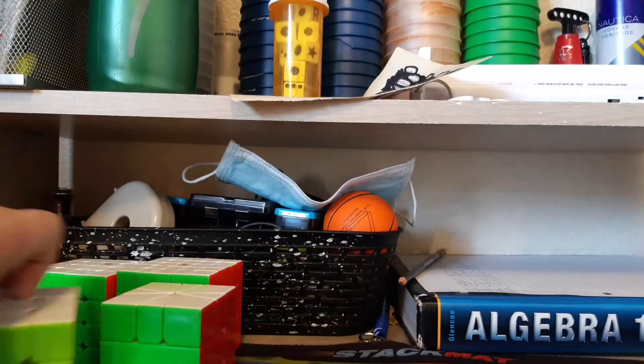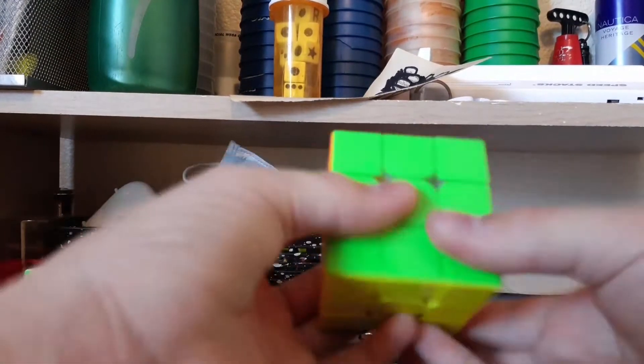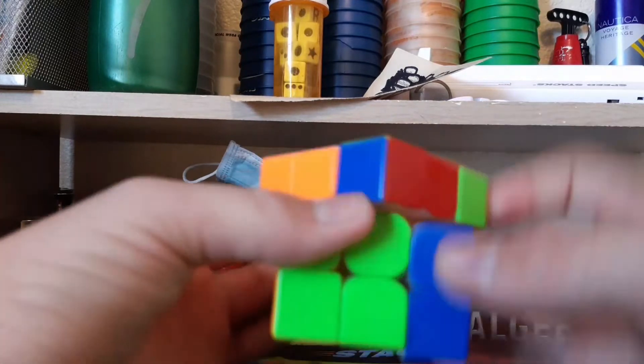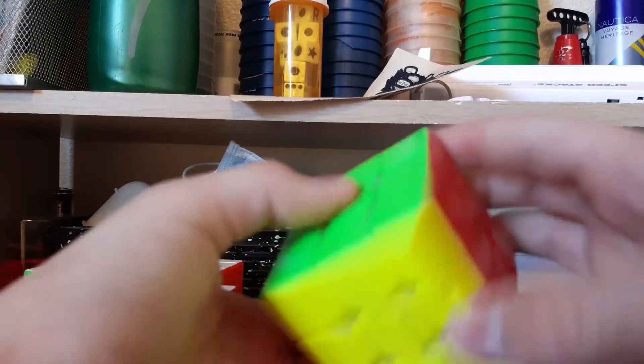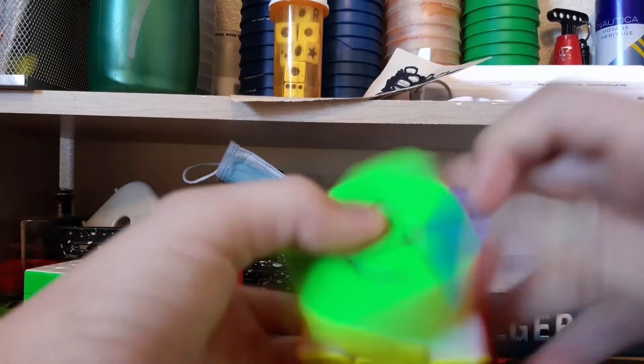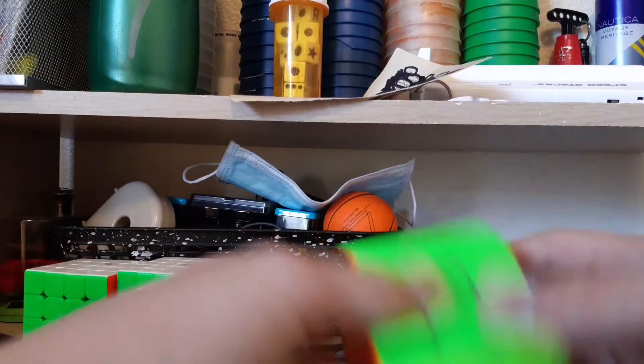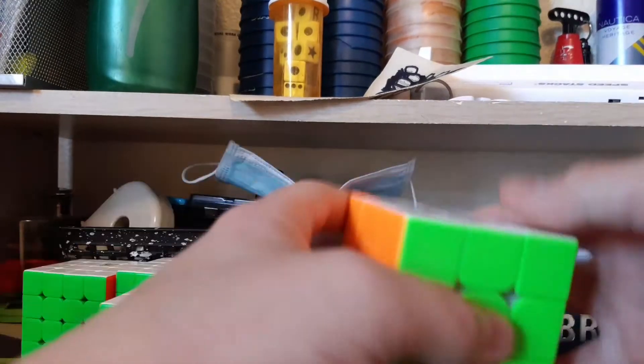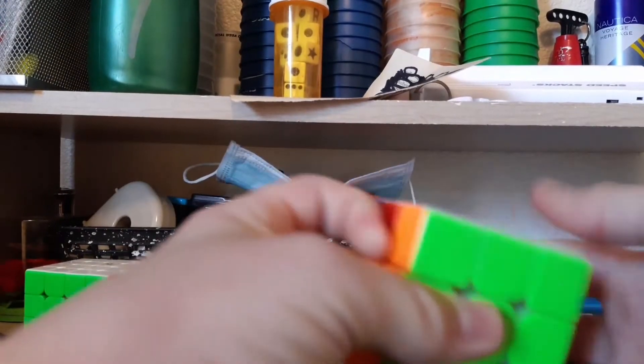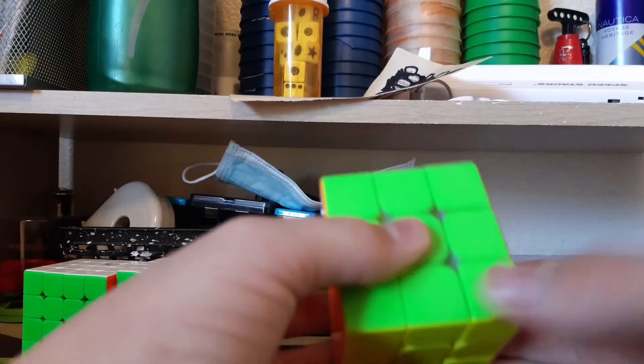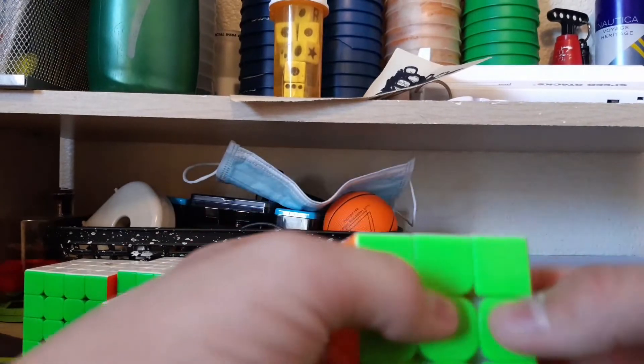For 3x3 and OH, I'm using this Valk 3 Elite M. This cube is honestly really nice and stable. I'm really enjoying the feeling of it right now and I'm just really liking it so far. This 3x3 is currently probably my best event right now. For 3x3, I basically just use CFOP. I don't use any ZBLLs or anything like that, just straight CFOP.